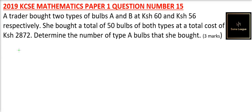Question number 15. We are told a trader bought two types of barb, A and B, at 60 shillings and 56 shillings respectively. She bought a total of 50 barbs at a cost of 2,872 shillings. We need to determine the number of type A barbs that she got. So we can form equations from the information given.